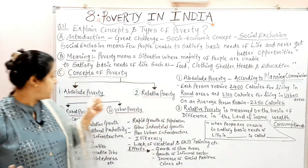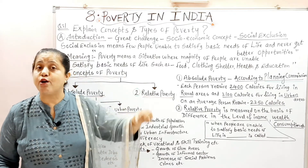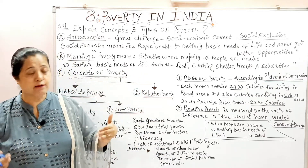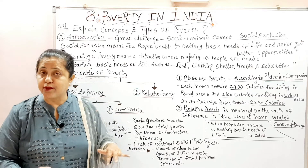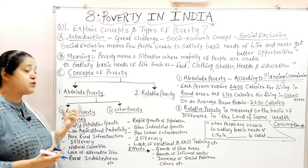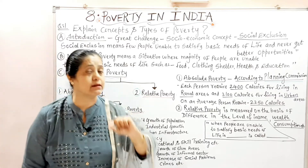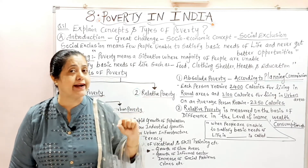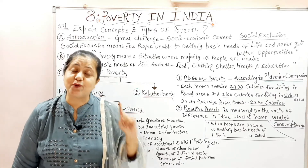They measured absolute poverty on the basis of calories. How many calories did you get from your food intake? If you are staying in the rural area, you need at least 2400 calories from your food. But if you are staying in the urban area, how many calories do you need? 2100 calories.